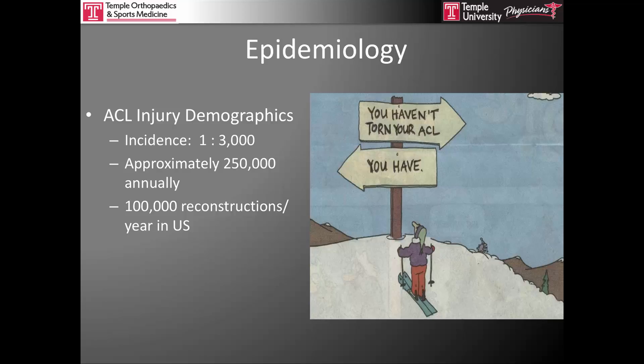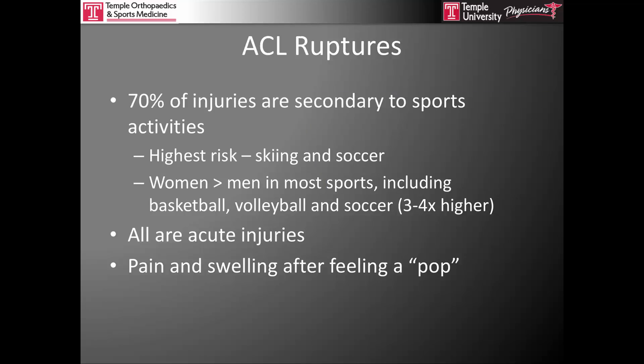In the United States, approximately 250,000 anterior cruciate ligament ruptures occur each year, making the incidence approximately 1 in 3,000, with 100,000 reconstructions performed each year. 70% of all ACL injuries are secondary to sports activities, with the remainder coming from other high-energy injuries such as knee dislocations, motor vehicle accidents, or other violent or high-energy mechanisms.